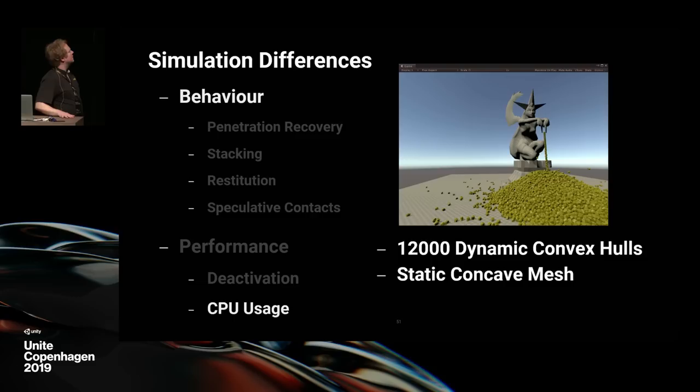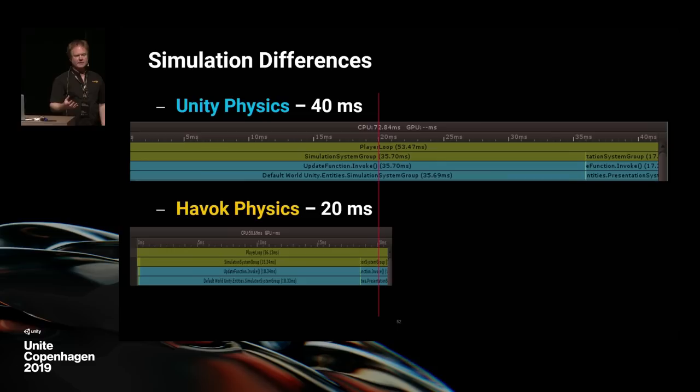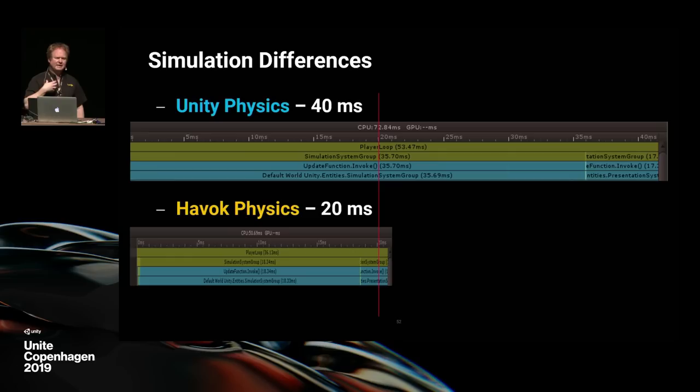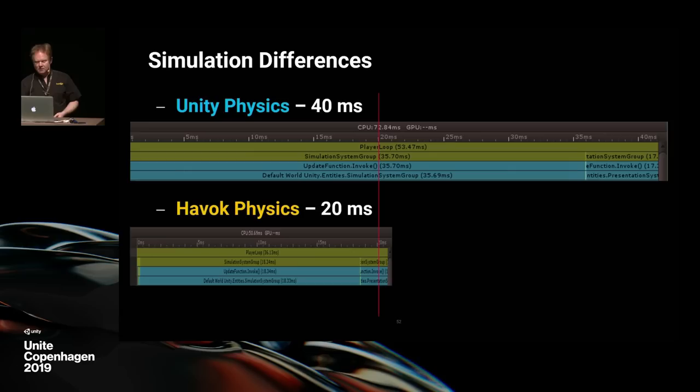Finally, touching on CPU performance — going back to the previous demo of 12,000 convex hulls piled on top of each other, we're seeing roughly about a 2x performance increase on these scenes between Unity and Havoc physics. You can actually end up with a much better performance increase when dealing with a larger environment where bodies are scattered around the scene rather than all piled up, because then deactivation kicks in and you're only simulating one or two bodies at any particular time near where your character is.